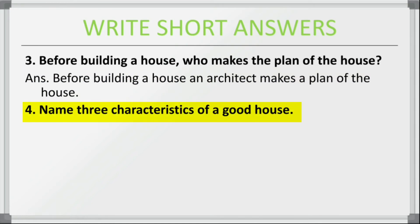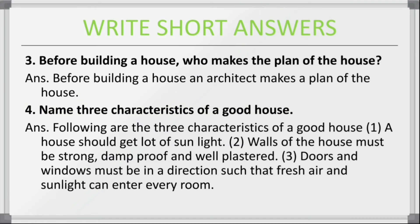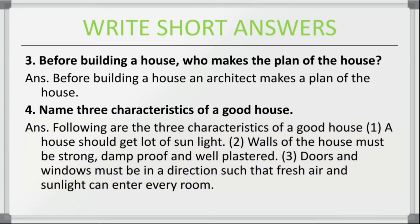Fourth question: name three characteristics of a good house. First, a house should get a lot of sunlight. Second, walls of the house must be strong, damp proof and well plastered. Third, doors and windows must be positioned so that fresh air and sunlight can enter every room.